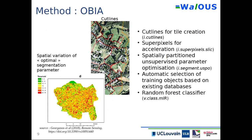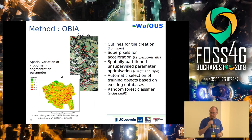This was run with an unsupervised parameter optimization module we have been developing over recent years. Within these small segments, we selected those for which we were fairly confident of their class automatically — using existing data, saying: if this falls into what we know should be a field and the NDVI is high enough, this is a low-vegetated area; if it falls into forest or known buildings, and so on. We then selected training data automatically from the objects and ran a random forest classifier implemented in GRASS GIS using R as a back end.